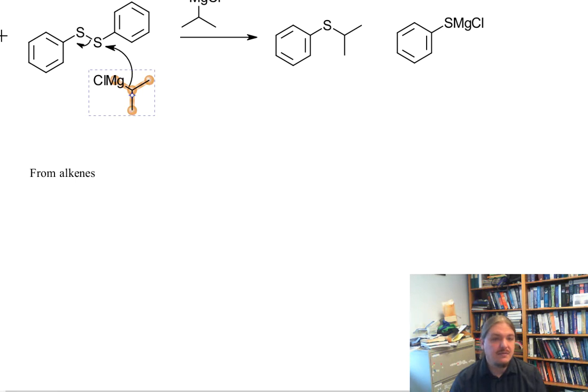The final variation here from alkenes is something called the thiolene reaction. And the thiolene reaction is really pretty straightforward. It's a reaction of an alkene, and usually it's a terminal alkene, with a thiol under conditions.